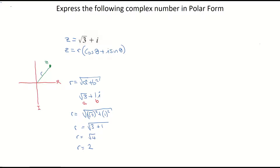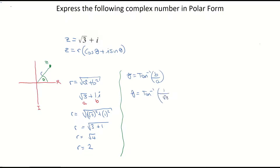The next thing we need to find is the angle θ between the coordinate and the real axis. To find θ, we use trigonometric ratios — specifically tan inverse of b over a, or y over x depending on the letters you're using. So θ equals tan inverse of 1 over root 3. Be careful whether your calculator is in radians or degrees: in degrees, θ comes out as 30 degrees; in radians, θ is pi over 6.